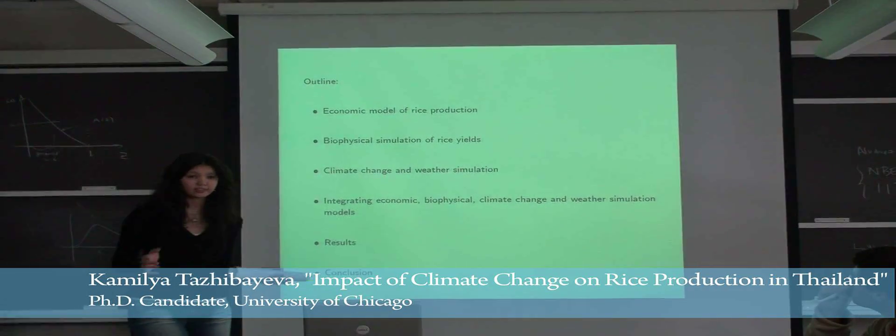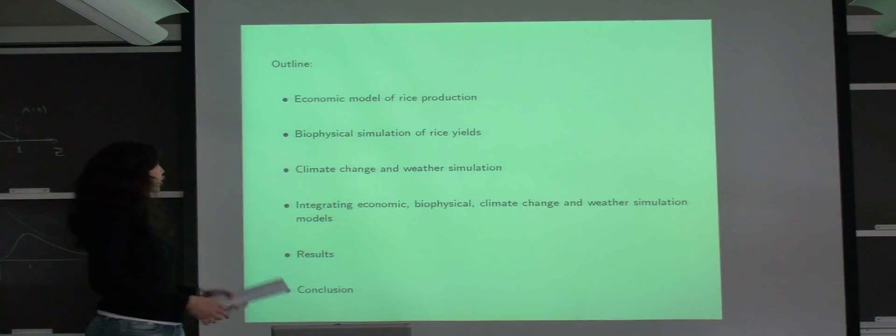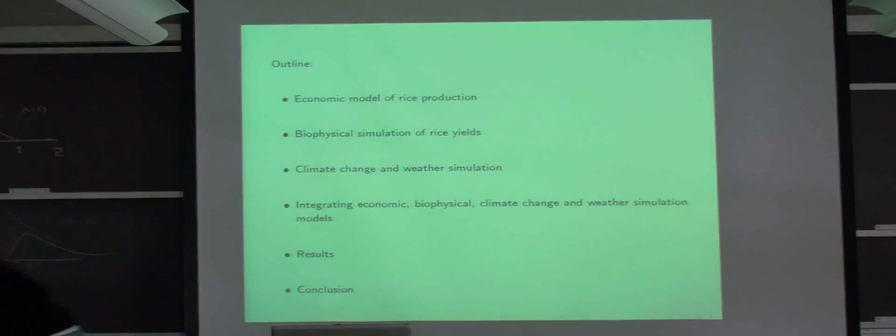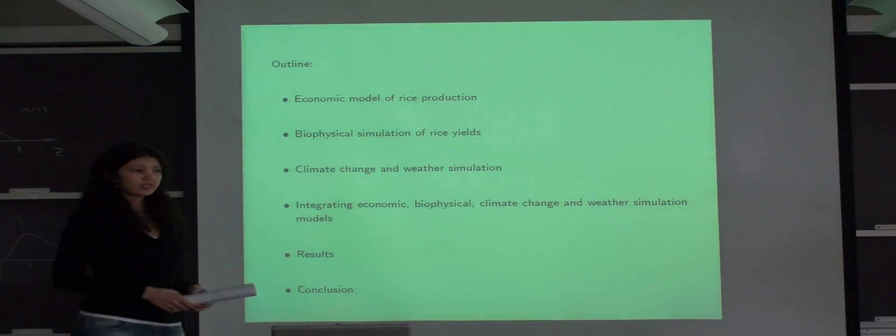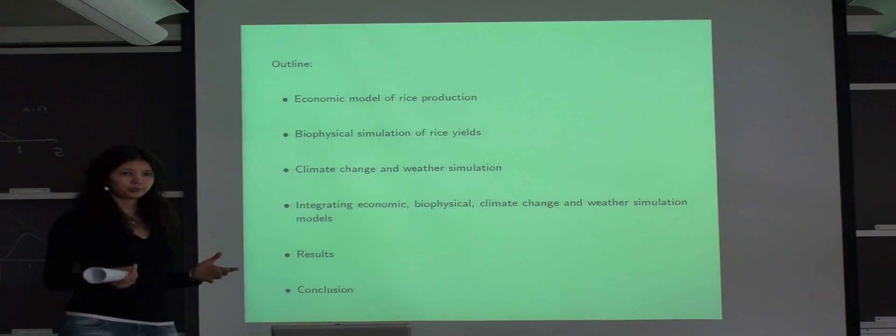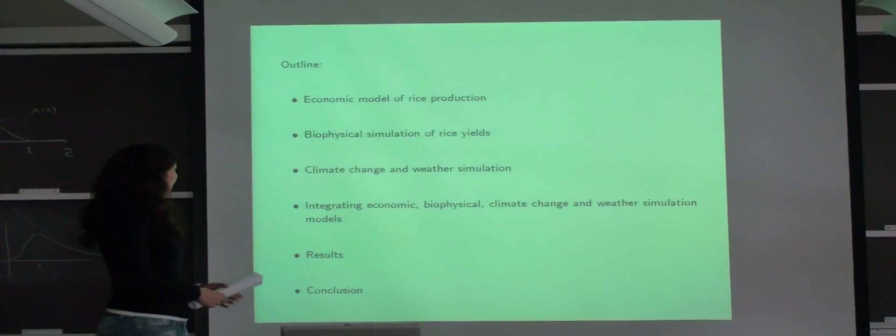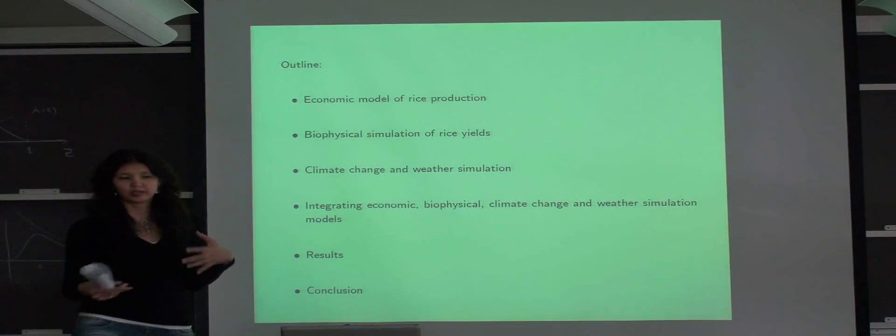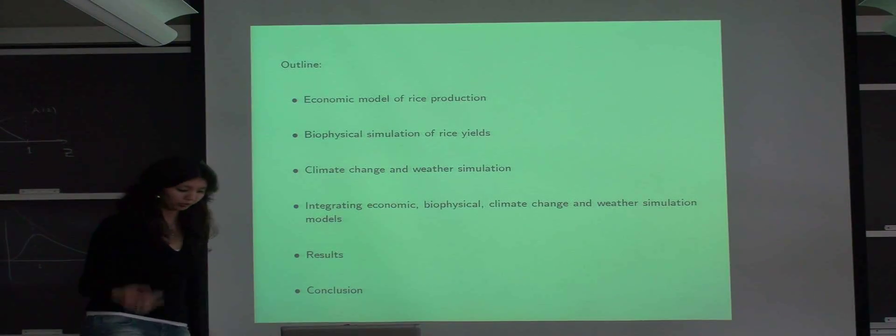In our paper we combine four different models from several disciplines to get at the effect of climate change. First I'll introduce our economic model where rice yields are output of farmers' input decision-making. Then John will talk about a different model that can also be used to predict rice yields but from a purely biophysical perspective. Then we'll talk about possible climate change scenarios and how we go about simulating them, how we integrate the four different models, and then we'll go to results and conclusions.